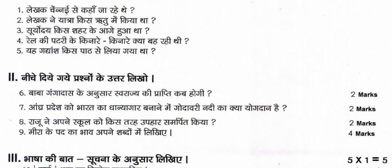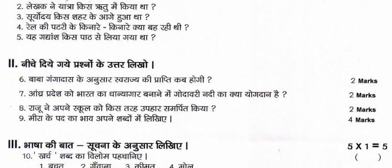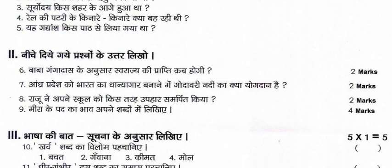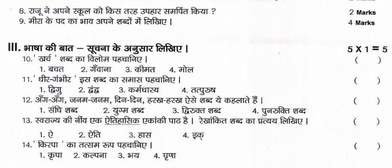The marks breakdown includes two marks, two marks, four marks — four marks sections already covered. Next, five into one is equal to five marks. For bits and multiple choice questions, the purpose is to keep the choice level moderate, with the plan checked carefully in the first round.